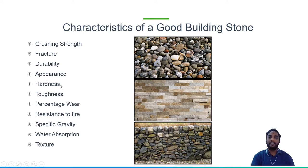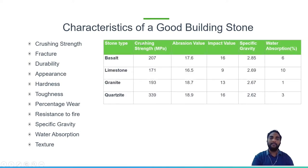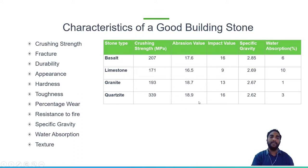Hardness is resistance against abrasion, and toughness is resistance against impact. These two properties decide how strong a material is. Looking at a comparison table for basalt, limestone, granite, and quartzite — showing crushing strength, abrasion value (hardness), and impact value (toughness) — hardness should be greater than 18 or 19 to be considered a very good material, and toughness greater than 16. The impact and abrasion values for limestone are very low compared to other rocks, so limestone is used for alternate purposes, not as a building stone.